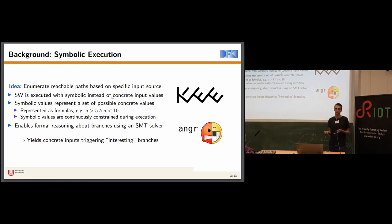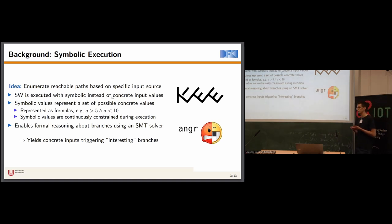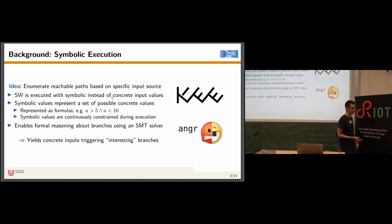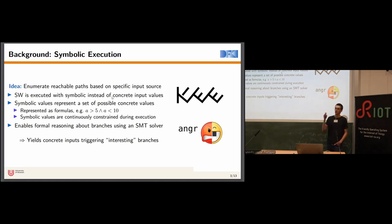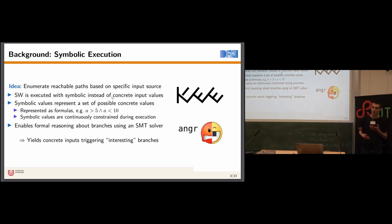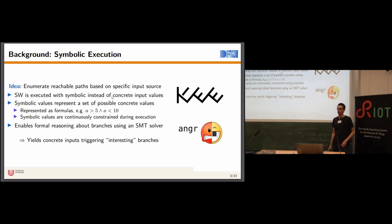For example, the formula 'a greater than 5 and a smaller than 10' refers to all concrete values between five and ten. These symbolic values are continuously constrained during program execution to match the constraints that the program enforces on inputs. This allows formal reasoning on branch conditions. If we have an if statement depending on a symbolic value, we can use an SMT solver to check if both the true and false branch are reachable under current constraints, allowing us to maximize branch coverage.